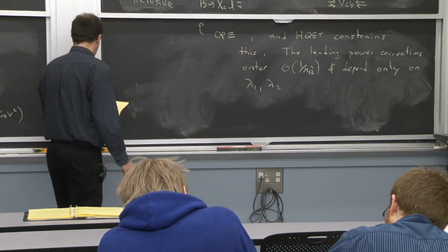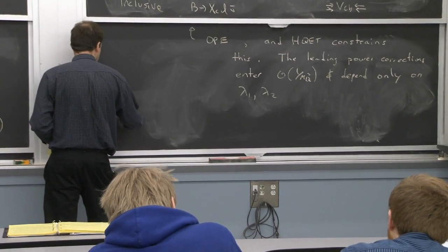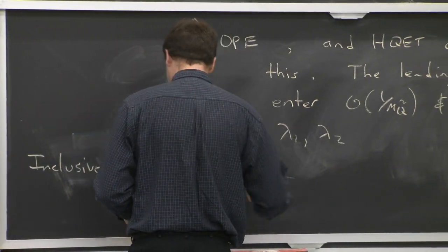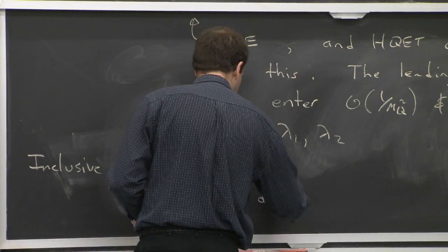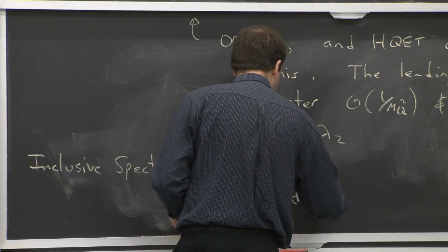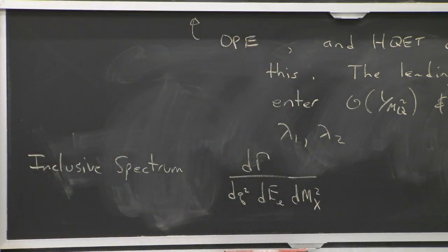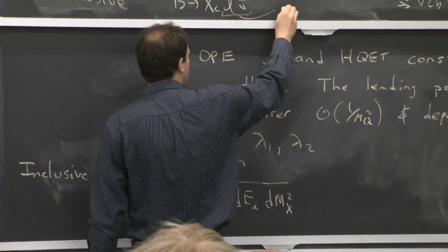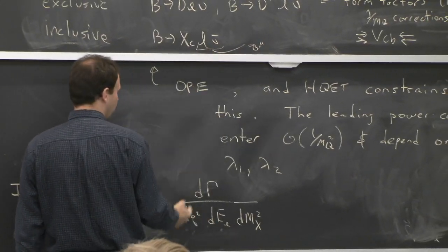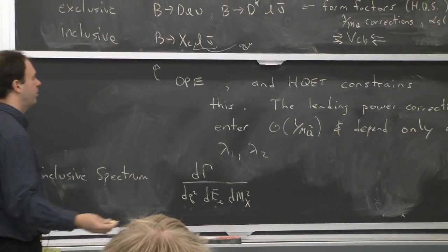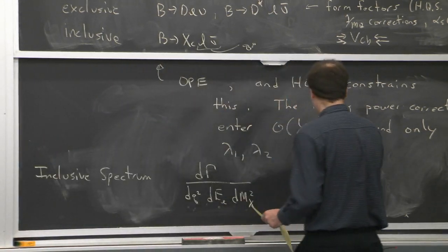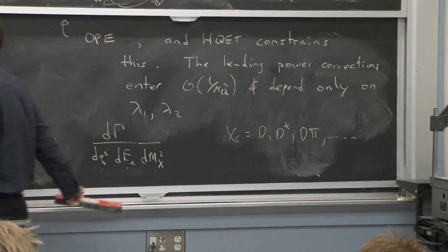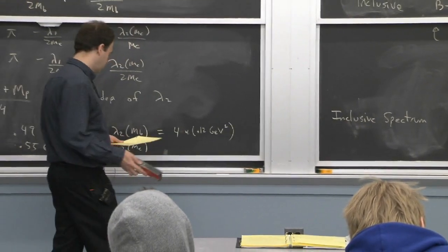We'll talk a little more about the inclusive case with the OPE. When you think about the decay rate for B to X sub c l nu bar, it's a doubly differential decay rate in q squared of the lepton pair and the lepton energy El. You don't know the mass of state X sub c because it could be different things — a D, D star, D pi. So you have a triply differential spectrum, and you can compute it with an operator product expansion.